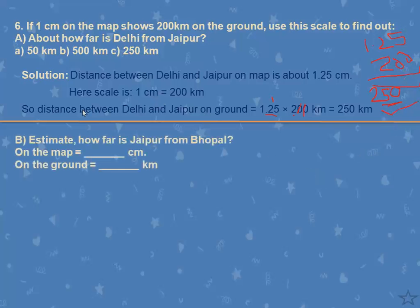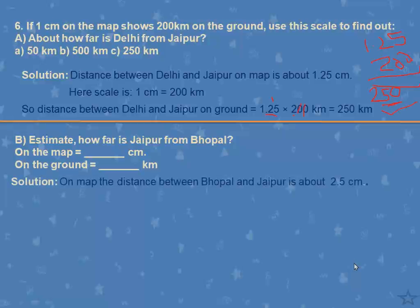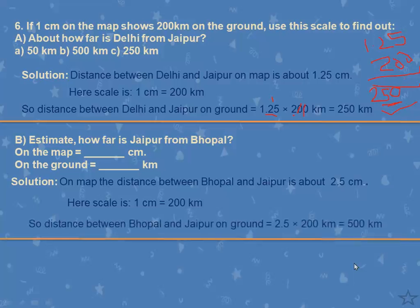Next question: Estimate how far Jaipur is from Bhopal — both on the map and on the ground. This is Bhopal and this is Jaipur. Take a scale and measure the distance. After measuring, the distance between Bhopal and Jaipur is about 2.5 centimeters — though you might find slight differences like 2.4 or 2.1 when measuring. The scale is 1 cm = 200 km, so the ground distance is 2.5 × 200 = 500 kilometers.